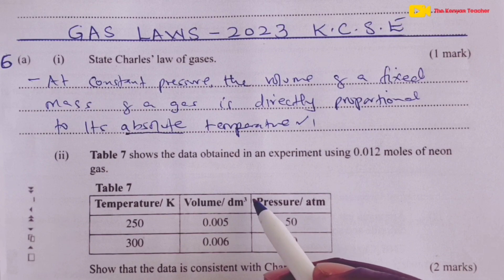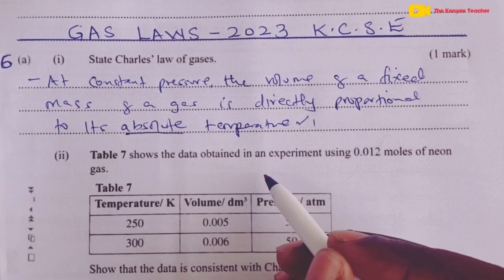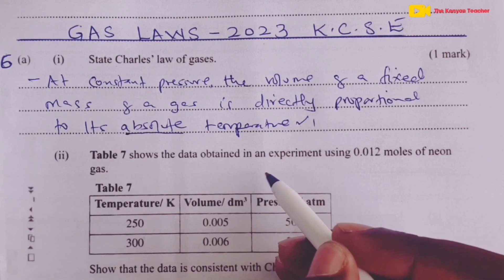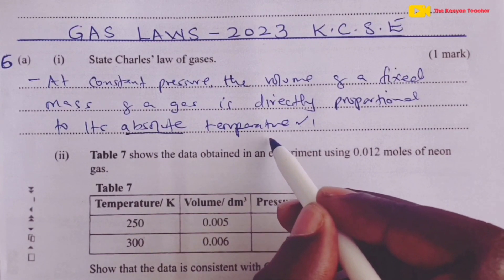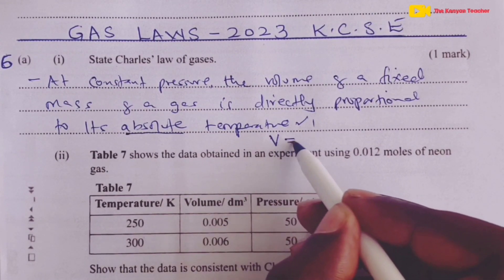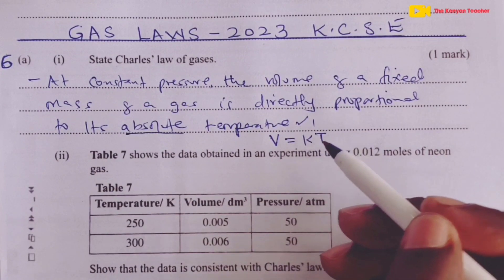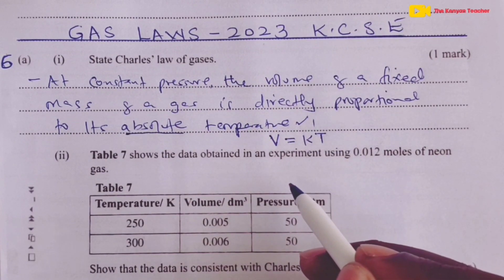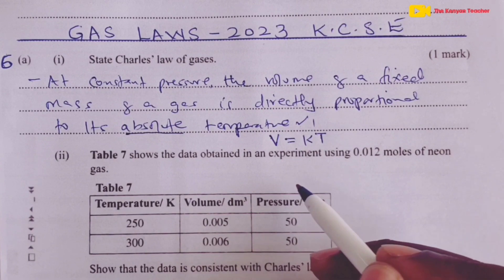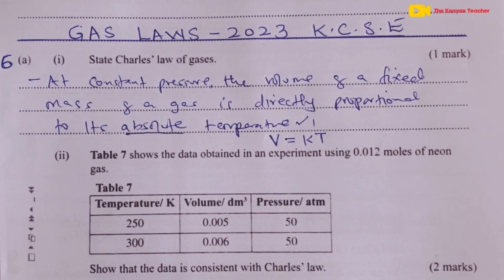Candidates who go for the mathematical representation would also get the mark. Mathematically, Charles's law can be expressed as V equals a constant multiplied by the absolute temperature, so V = KT would also score the mark.